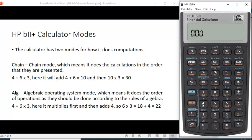If I say 4 plus 6 times 3 and hit equals, I get 30, because what it does is it does it in the order that the calculations are presented. 4 plus 6 is 10, and then 10 times 3 is 30.